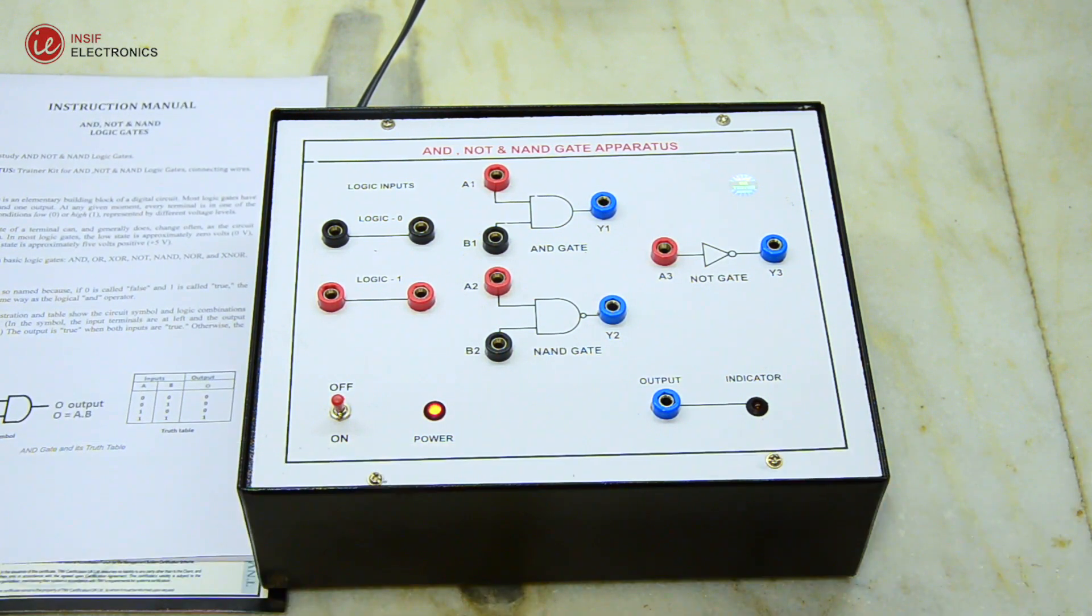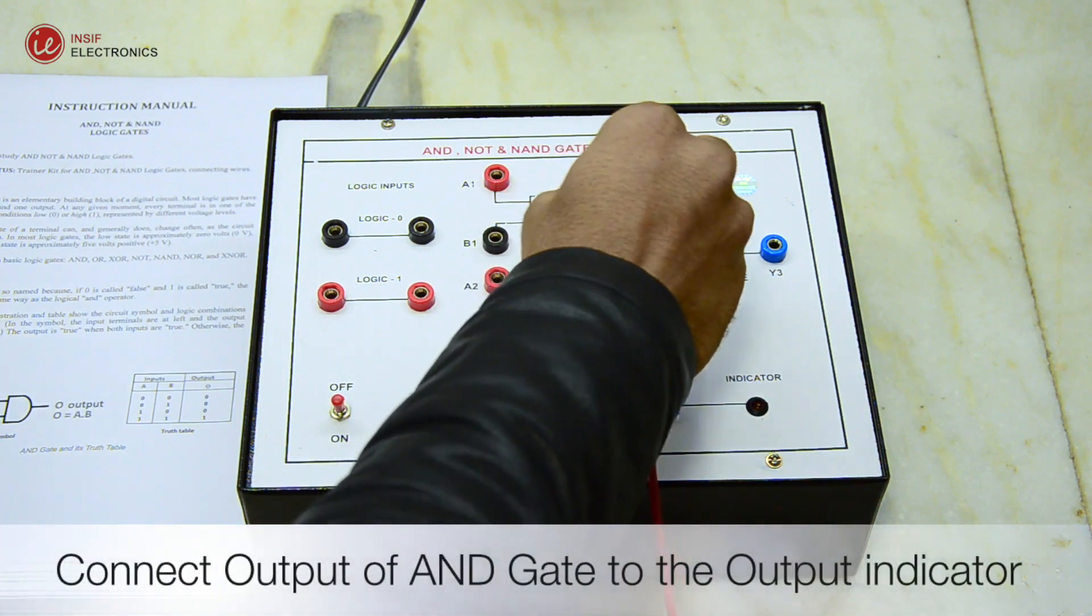A logic gate is an elementary building block of a digital circuit. Most logic gates have two inputs and one output.